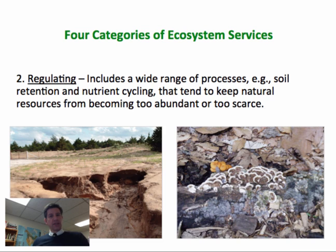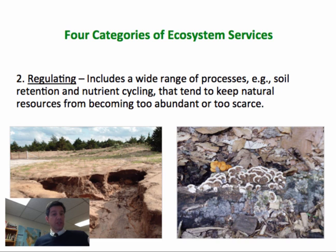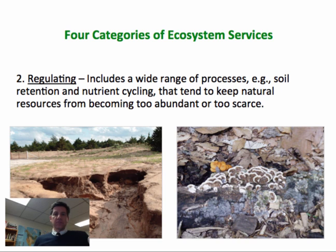The next level would be regulating services. These are ecological processes or geologic functions that have some bearing over the abundance or availability of materials or species on our planet. So things like erosion control — the ability for soil to be held in place so that plants can grow on it, as opposed to blowing away by the wind or washing away by the water. Another would be something like nutrients returning to the environment through decomposition — things like fungi breaking down the carbon in a fallen log and ultimately returning the nutrients to the soil so they can be taken up by another organism. Without regulating ecosystem services, some species and features of our natural world could become too rare or too abundant.